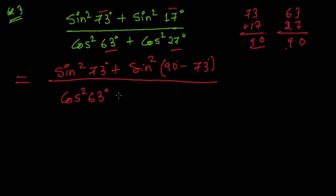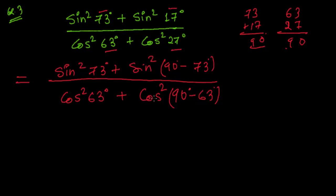In the denominator, we have cos²63° and cos²27°. Since 27 = 90 − 63, I can write cos 27° as cos(90° − 63°), and since it is squared, I write cos²(90° − 63°). So the numerator is sin²73° + sin²(90° − 73°).